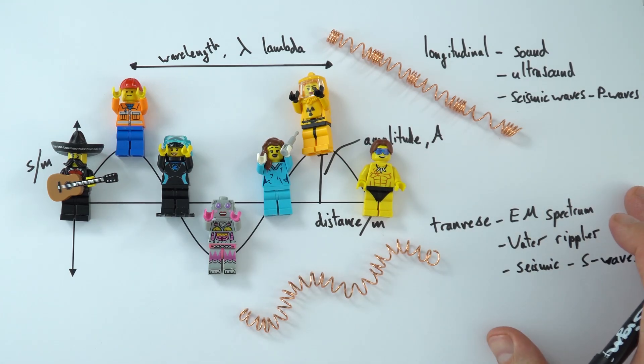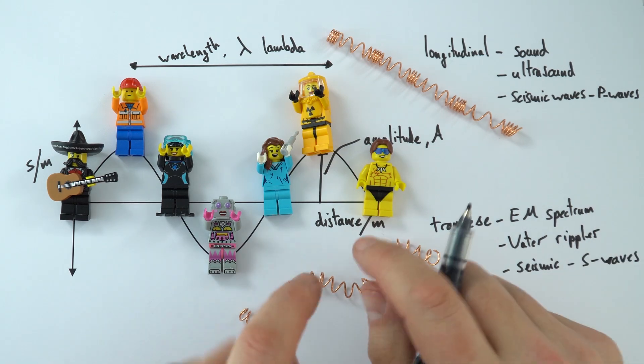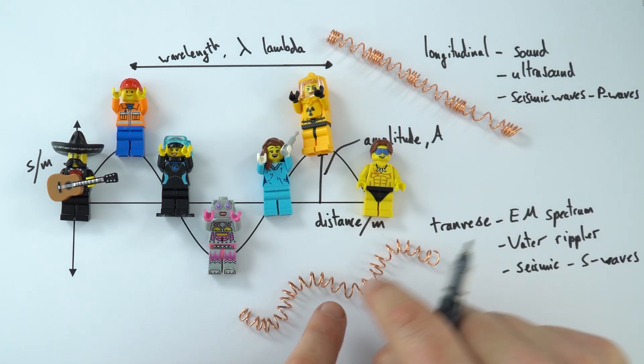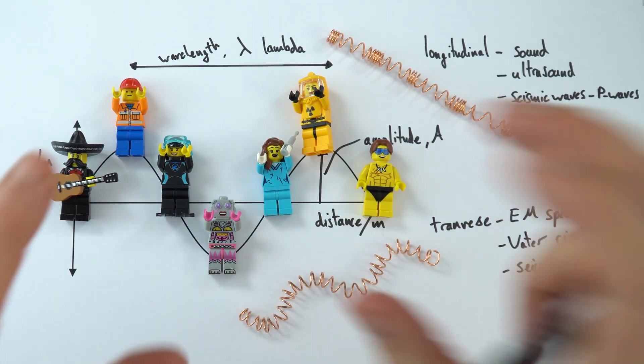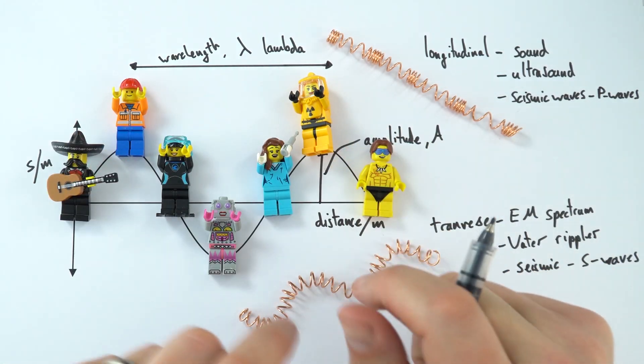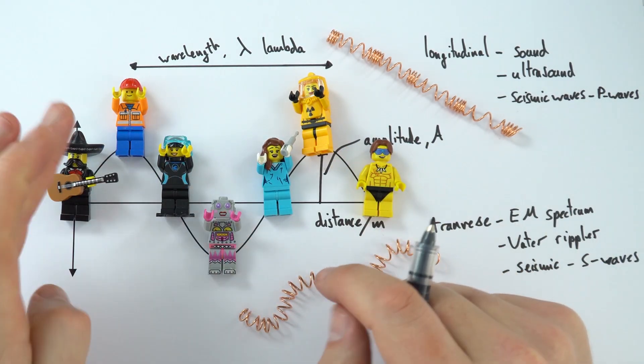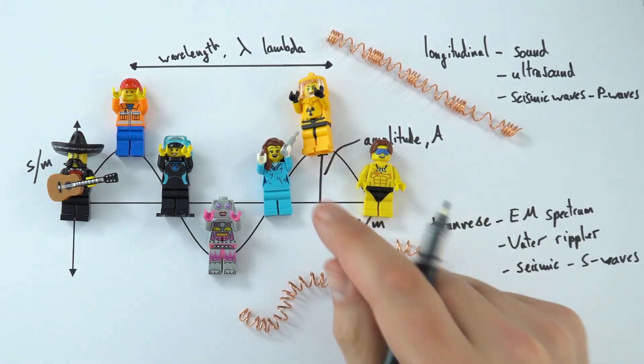So here are just some examples of transverse waves. But either way, if we were to think about the position of one of these particles in either a longitudinal or transverse wave, we can still represent it on a graph like this. And therefore, we can identify things like the wavelength of that wave or the amplitude.